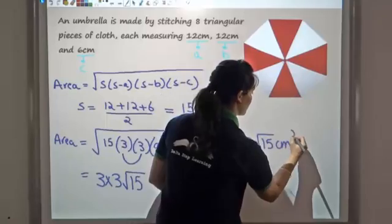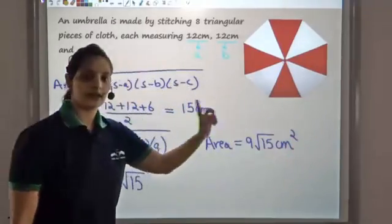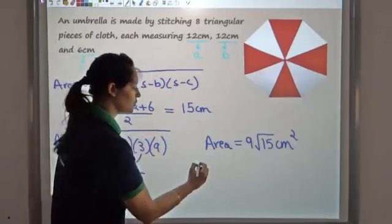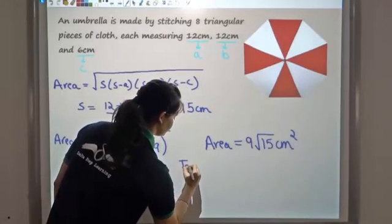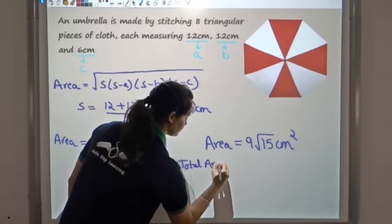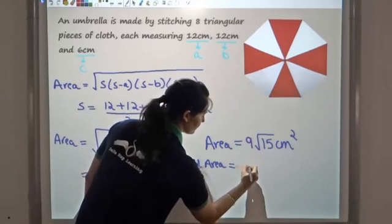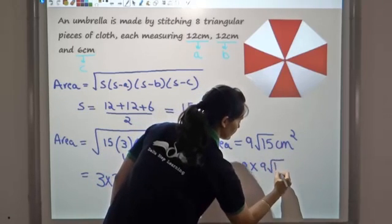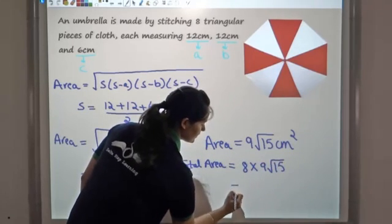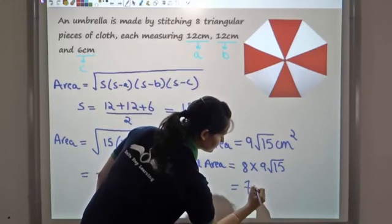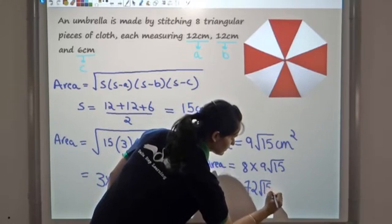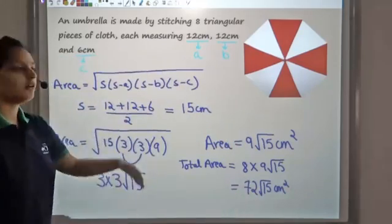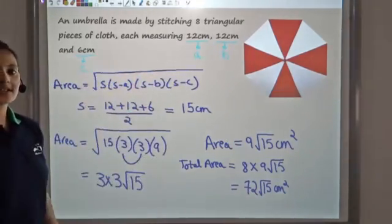So 9√15 cm² is the area of one triangular piece. We have eight such triangular pieces, so the total area is 8 × 9√15 = 72√15 cm². This is the total area of cloth used in making this umbrella.